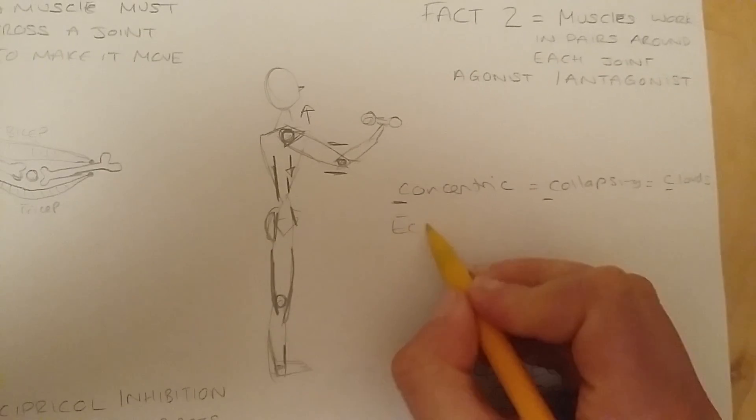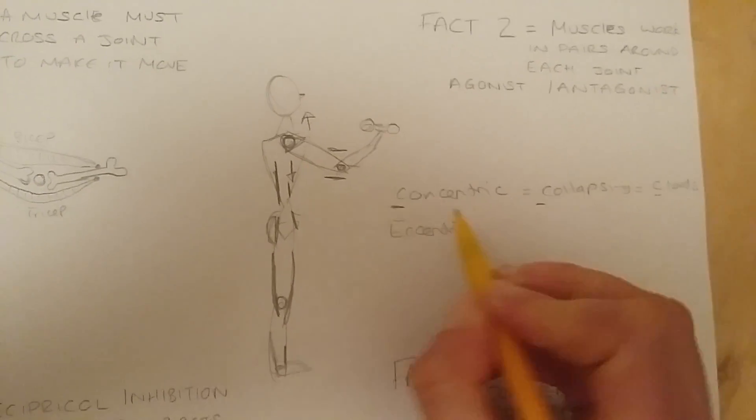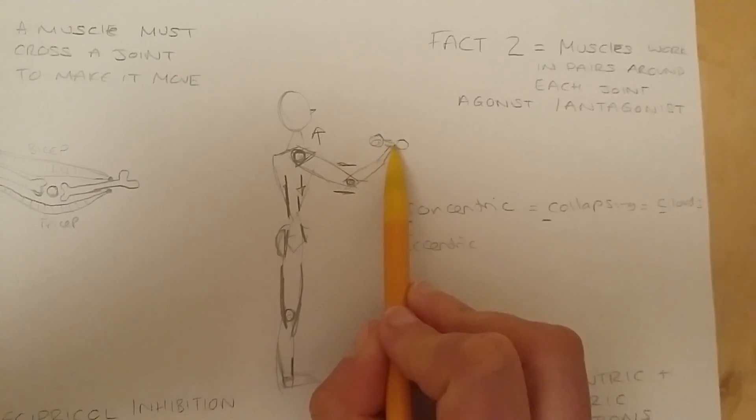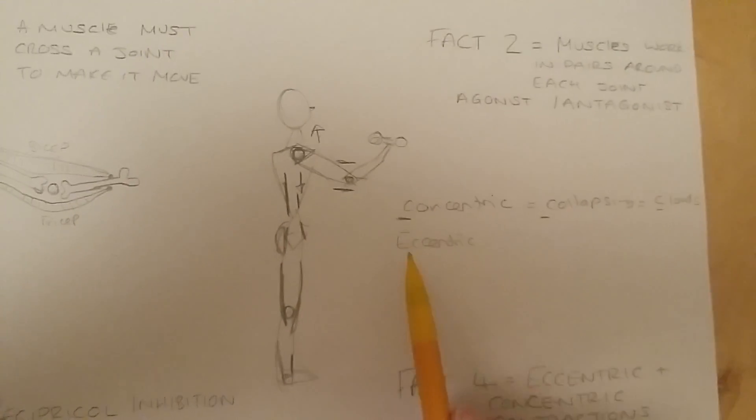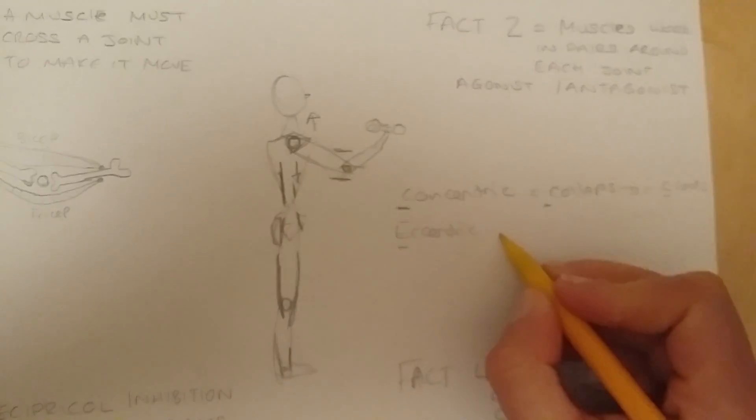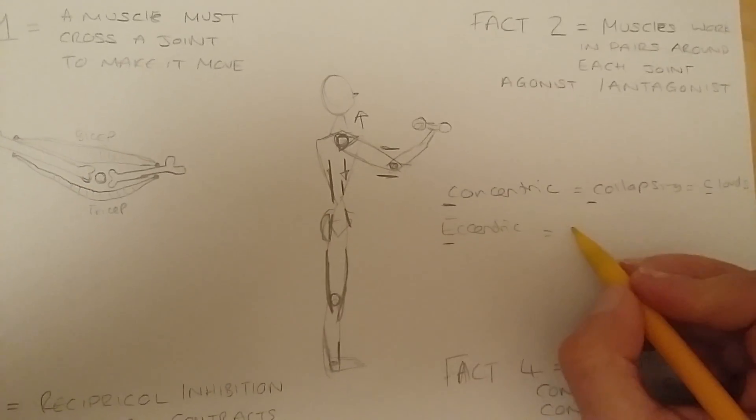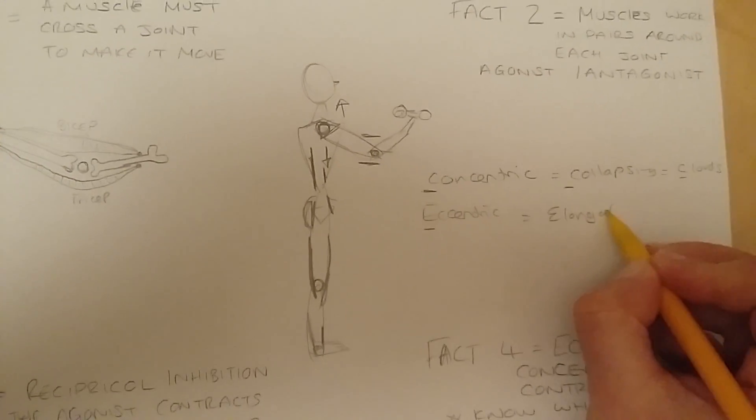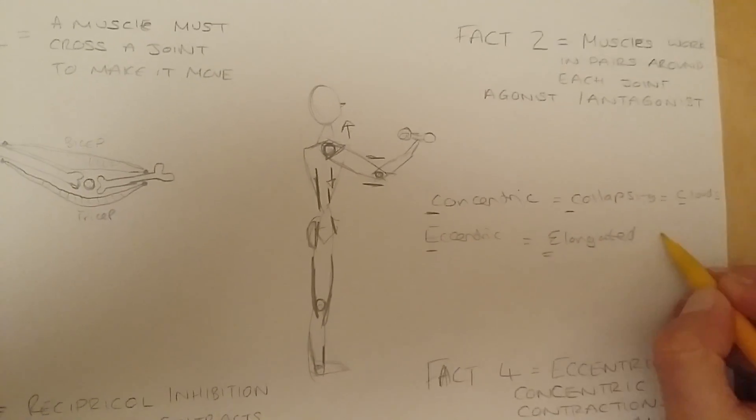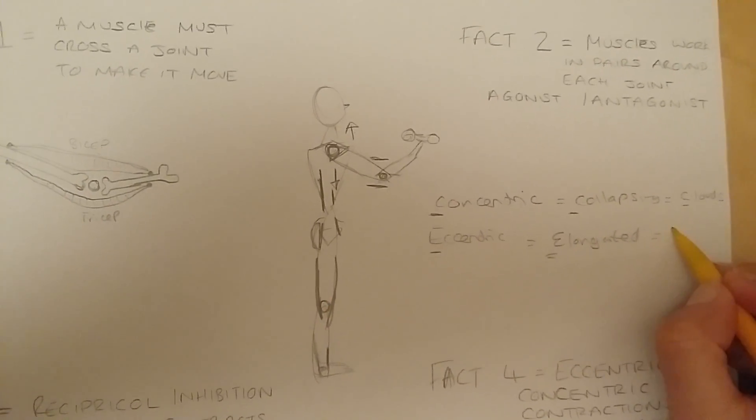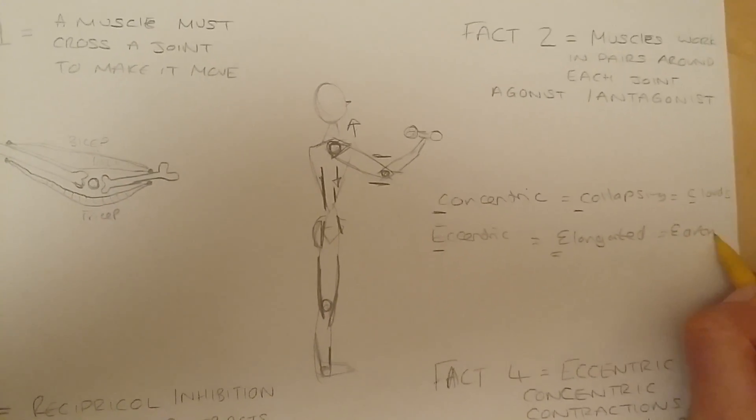Whereas conversely, when you've got eccentric contraction, this is now when we're going back down, we're lowering the dumbbell back down towards the floor, the eccentric contraction, this muscle elongates. So it extends right out. So we end up with an elongated muscle. And the weight itself goes down towards the earth.